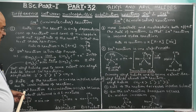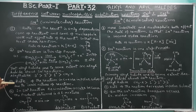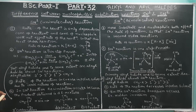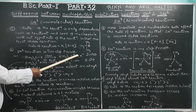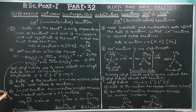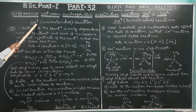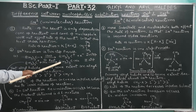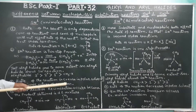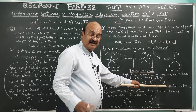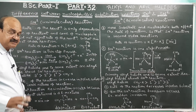Regarding the effect of solvent: in SN1, the rate of reaction increases in polar (ionic) solvents because the reaction is ionic in nature and ionization is promoted by polar solvents. In SN2, the rate of reaction decreases in polar solvents. This is another important difference between SN1 and SN2.